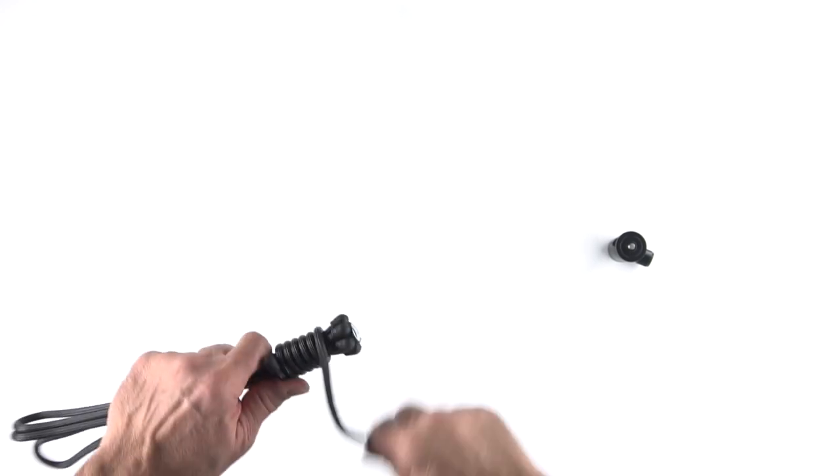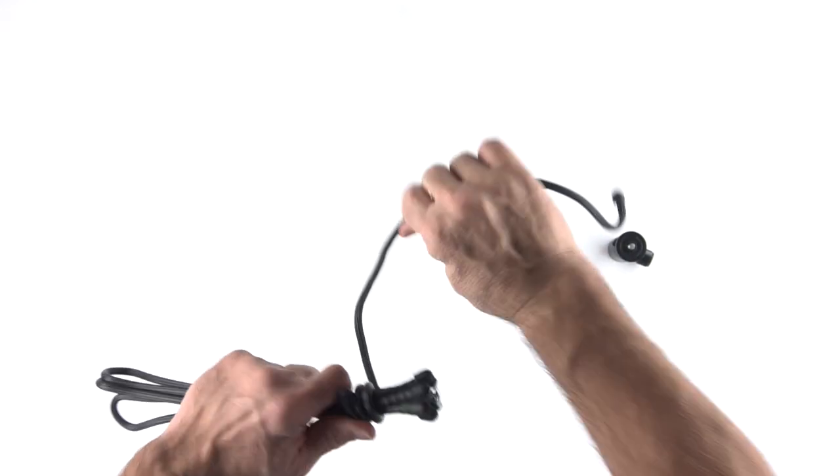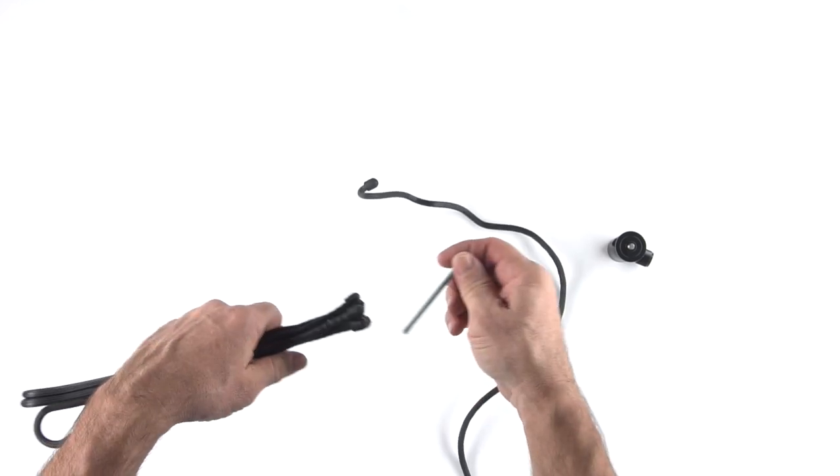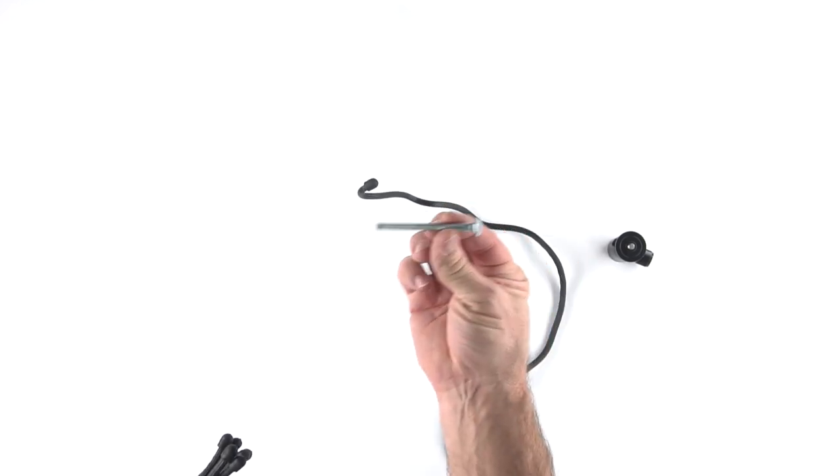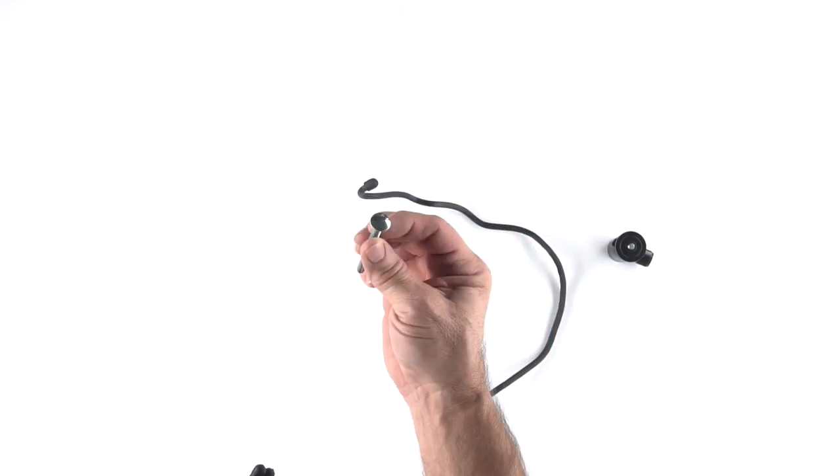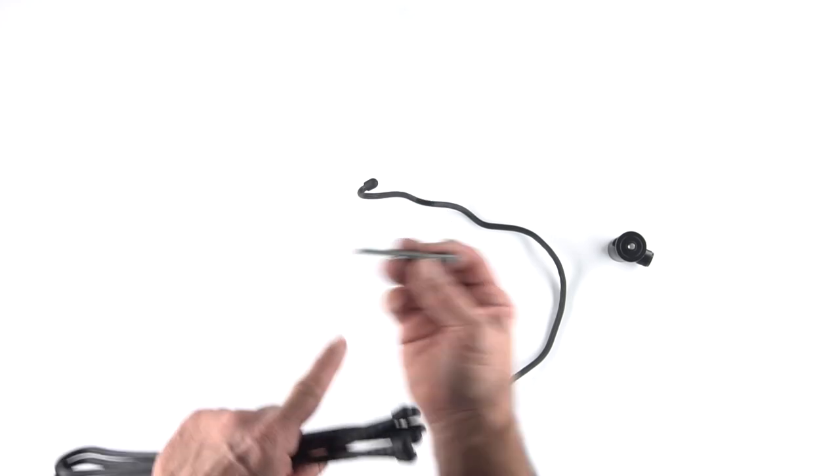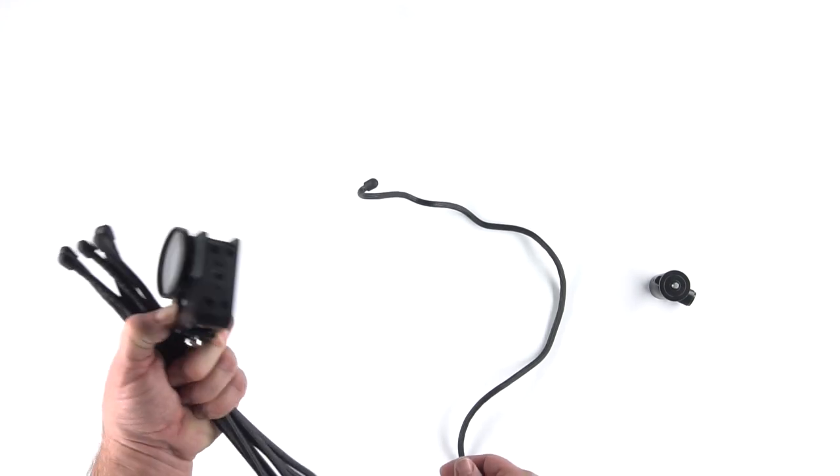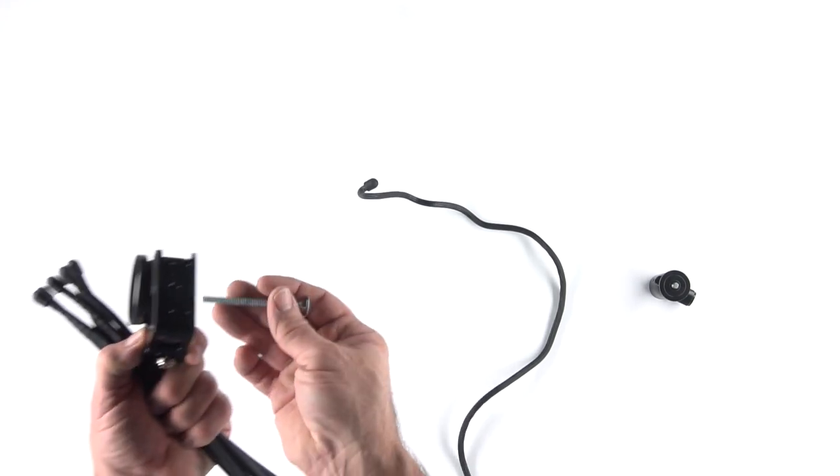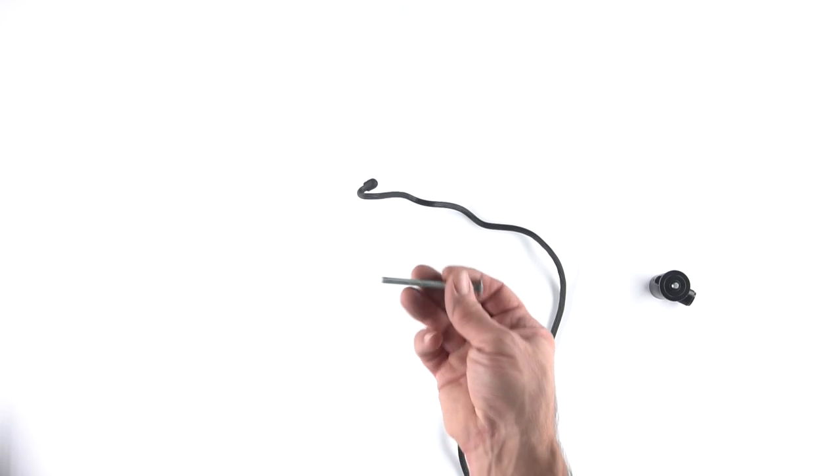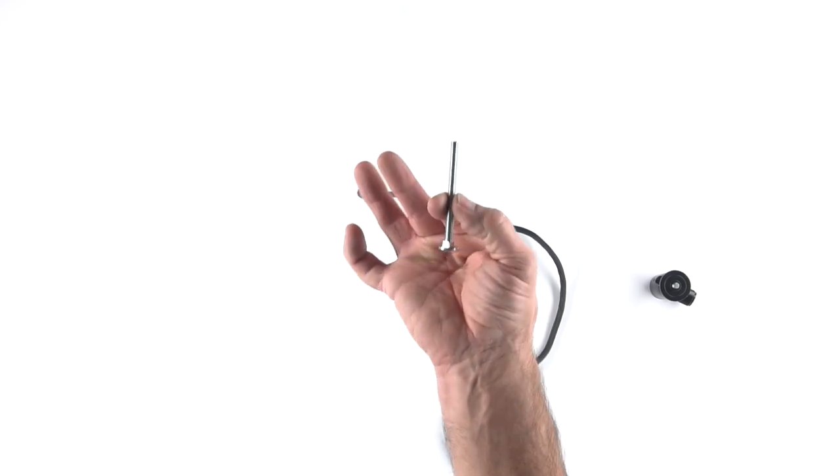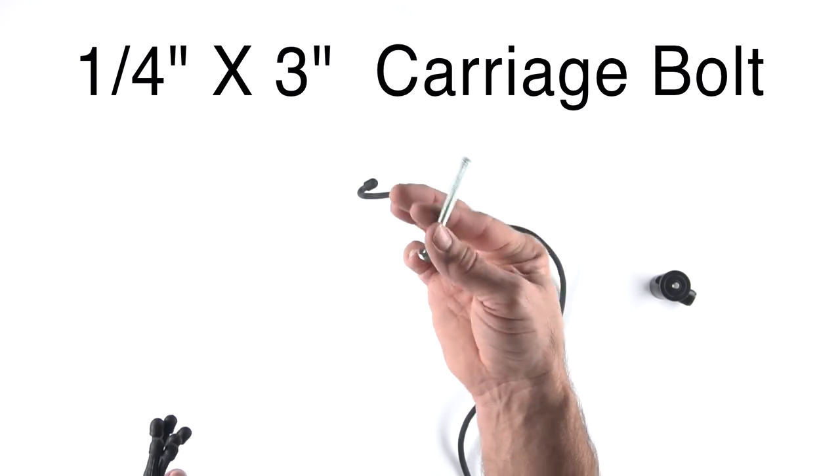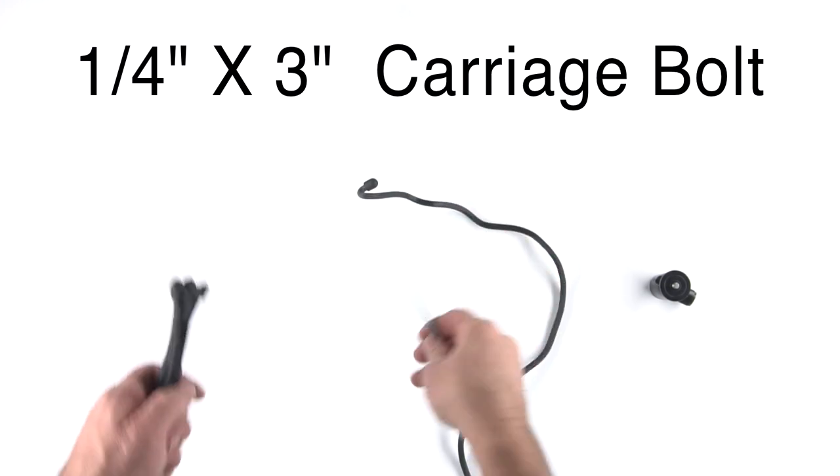We'll take it apart, and I have a quarter-twenty carriage bolt. This is what threads into the tripod or into the GoPro. I'm using a cage on the GoPro, that's why I have a normal thread for a camera. That's quarter-inch by 20 threads per inch, quarter-twenty, and it's three inches long.